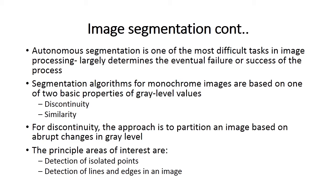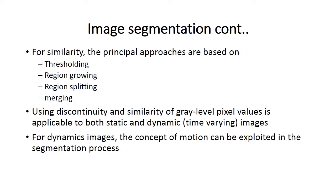Segmentation algorithms for monochrome images are based on one of two basic properties of gray level values, which range from 0 to 255: discontinuity and similarity. For discontinuity, the approach is to partition an image based on abrupt changes in gray level. The principal areas of interest are detection of isolated points, detection of lines, and edges. For similarity, the principal approaches are based on thresholding, which divides the image at a particular value into two parts.